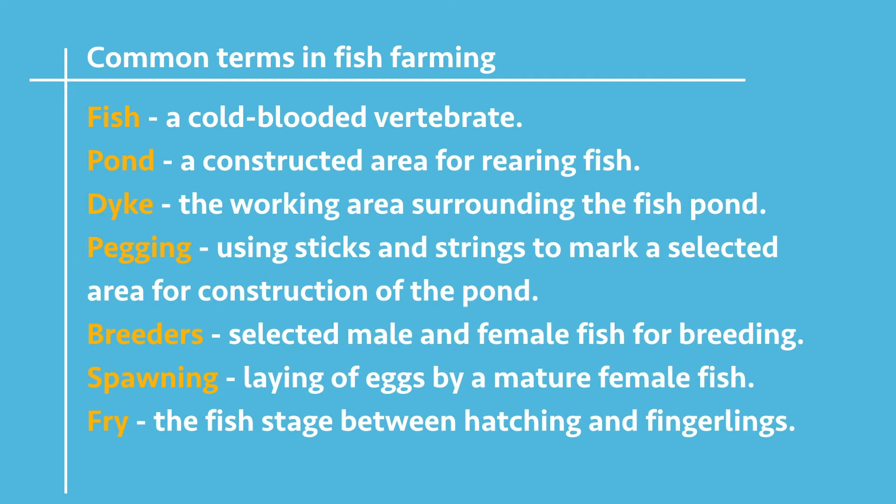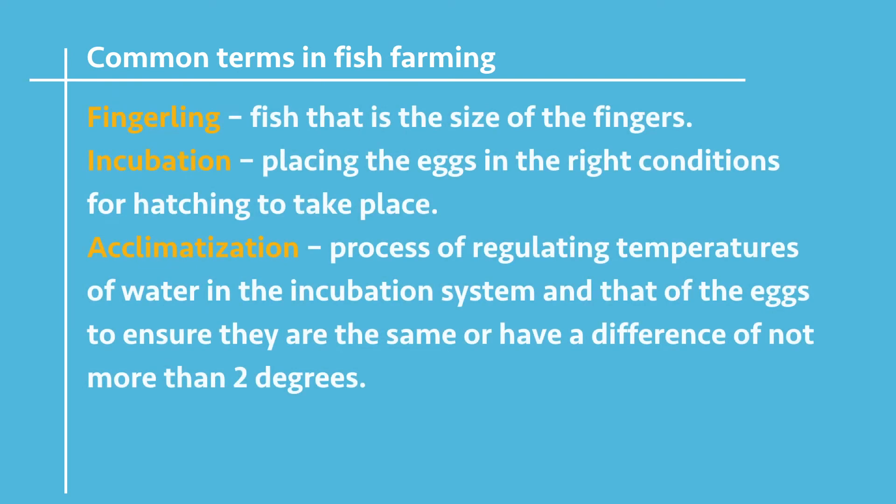Spawning is the process of laying eggs by a mature female fish. Afrae is the stage of the fish between the hatching of the eggs and the fingerling stage. A fingerling is a fish the size of a finger. Incubation is the process of placing eggs in the right conditions for hatching to take place.